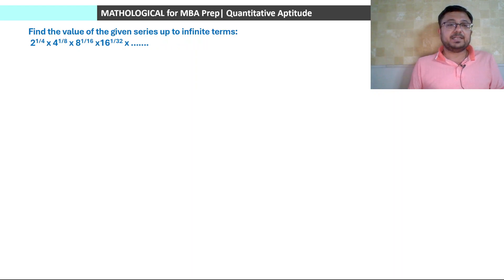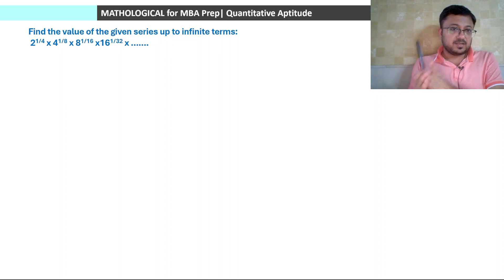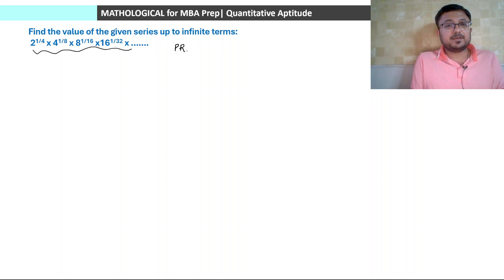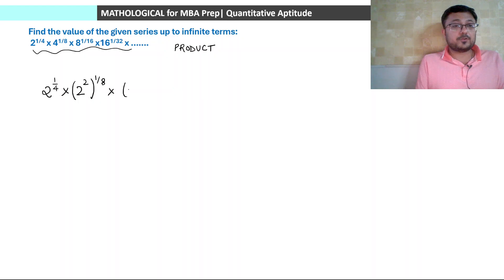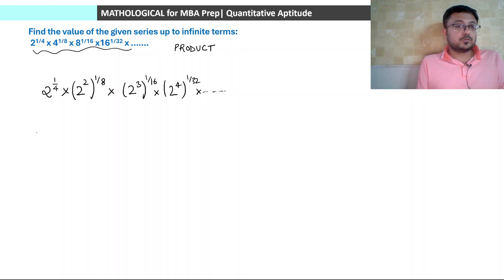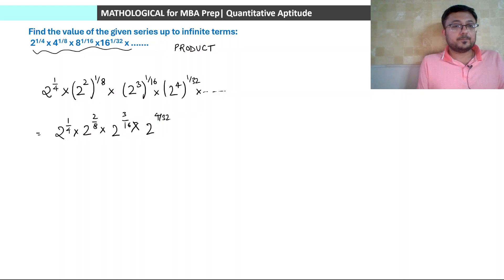Next interesting question: find the value of the given infinite product 2^(1/4) · 4^(1/8) · 8^(1/16) · 16^(1/32) and so on. This is a product series. Rewriting in terms of powers of 2: 2^(1/4) · 2^(2/8) · 2^(3/16) · 2^(4/32) · ... Since multiplying powers of the same base adds the exponents, the answer equals 2^S where S = 1/4 + 2/8 + 3/16 + 4/32 + ...